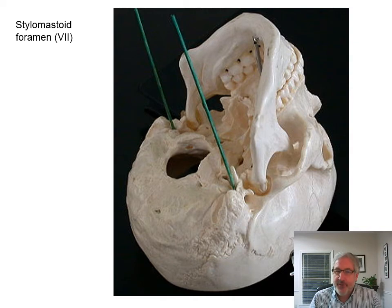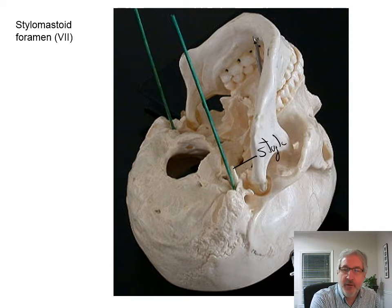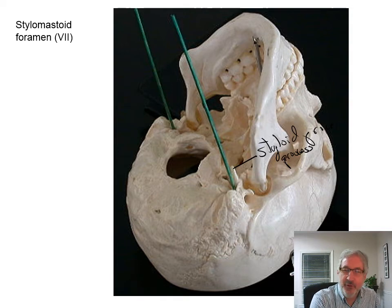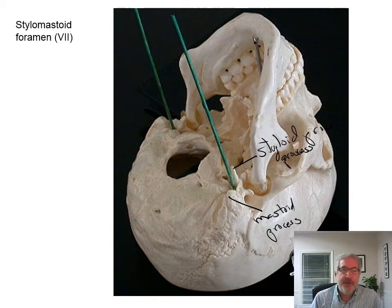Here's the stylomastoid foramen — this is where the facial nerve, nerve seven, comes out of. You can see the styloid process here and the mastoid process right behind it. That's where facial nerve seven exits.